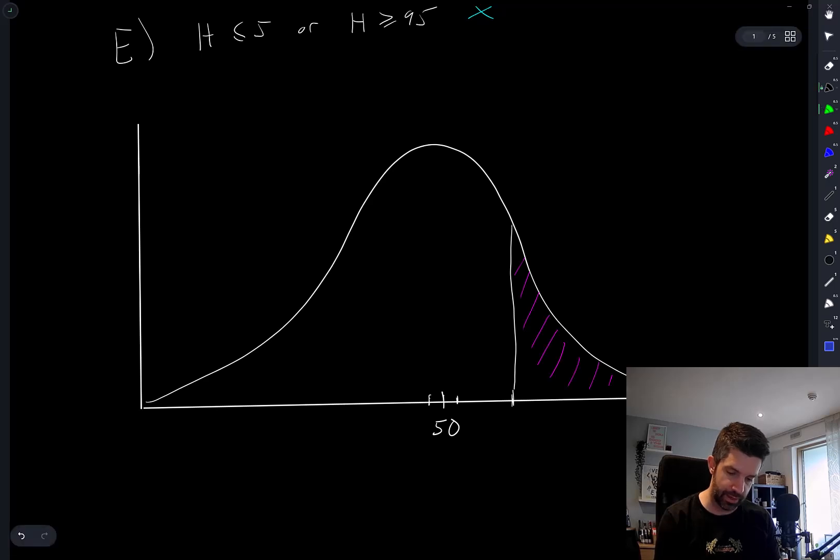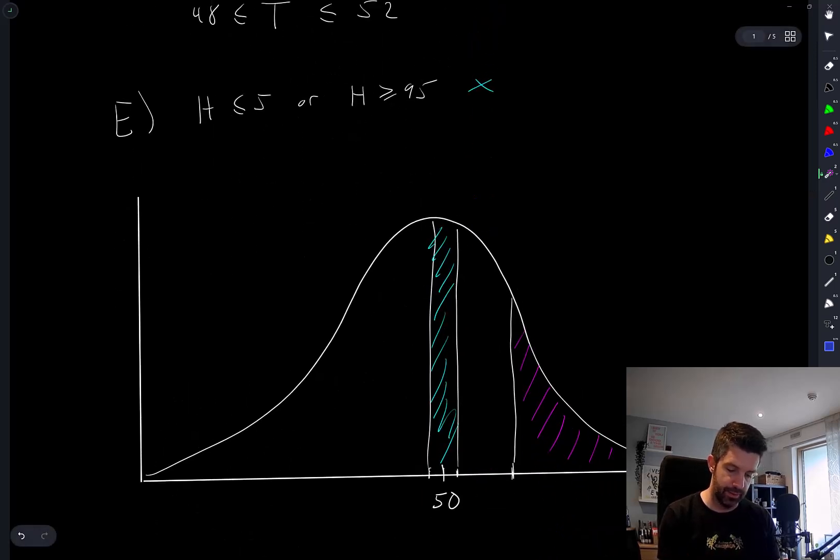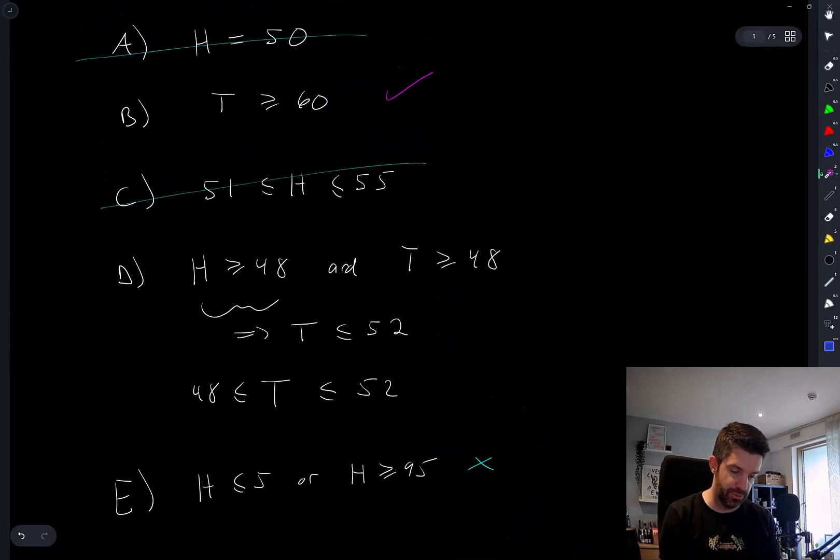So we're looking at that area versus this area. Like obviously my sketch is completely not to scale or anything. But my intuition is telling me that this one is going to have a higher probability. So yeah, that's going to be my answer.